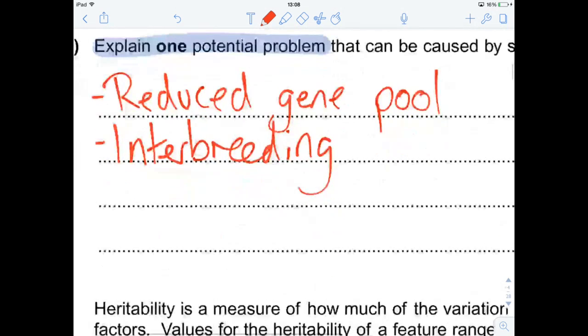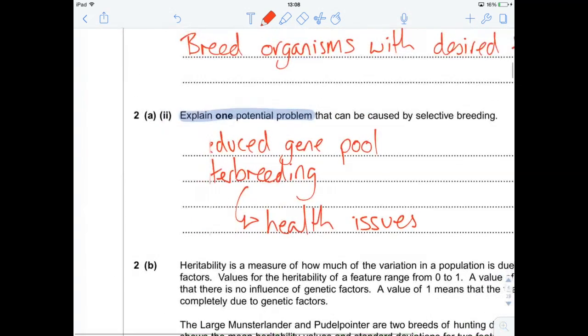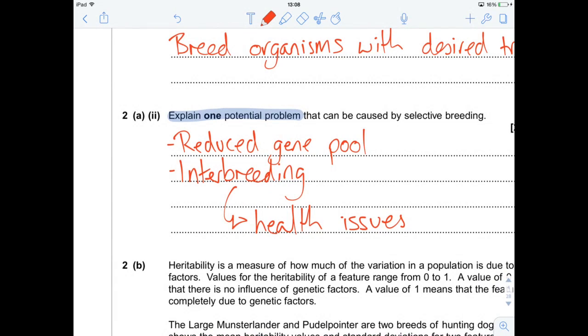So we could go for the reduced gene pool approach or you could go for the interbreeding approach, whichever. And this interbreeding one results in more recessive alleles being expressed or leads to health issues. So in dogs, things like Labradors, quite a common family pet, but they've been interbred quite a lot. And as a result, you get health issues like hip dysplasia that I'm sure some of you guys have come across. But that's because of selective breeding.